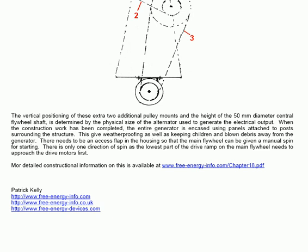There needs to be an access flap in the housing so that the main flywheel can be given a manual spin for starting it. There is only one direction of spin as the lowest part of the drive ramp on the main flywheel needs to approach the drive motors first. More detailed constructional information on this is available at www.free-energy-info.com forward slash chapter 18 dot pdf.